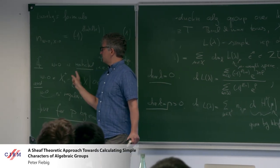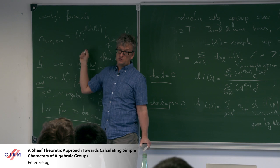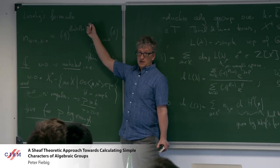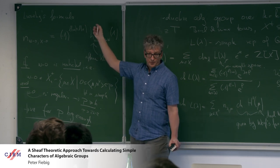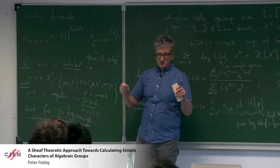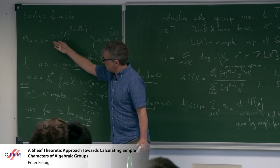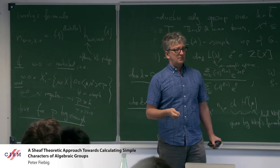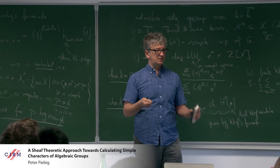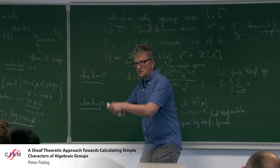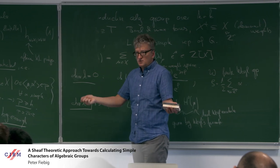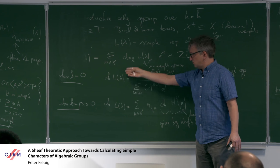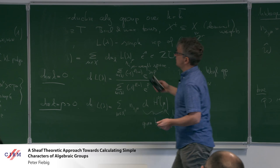Even though we only consider restricted weights, it is known how to calculate all characters from these restricted ones using Steinberg's tensor product formula. So if p is bigger than the Coxeter number, it's actually enough to know these weights. That said, it would be nicer to have a formula you can just write down for any weight — plug in lambda and get something — rather than first determining restricted weights and then applying Steinberg's formula. But we are far from anything like this.